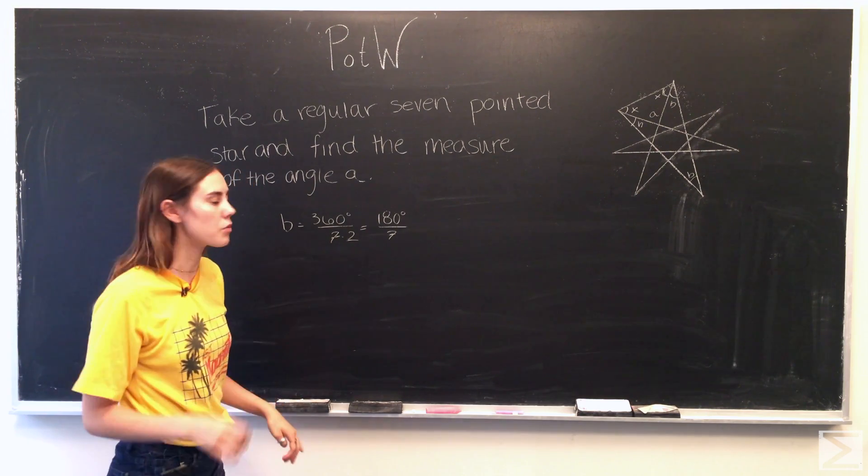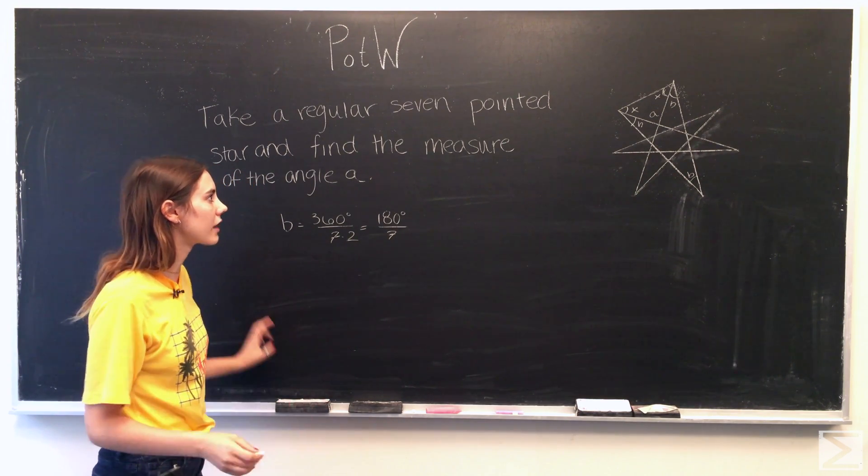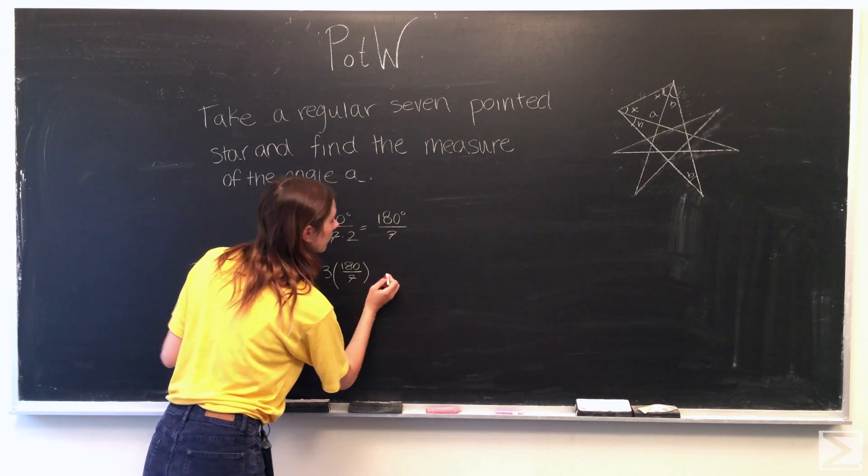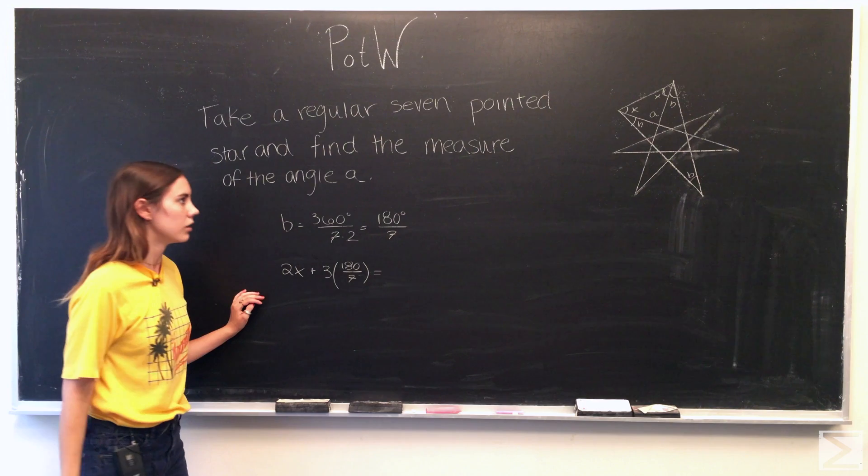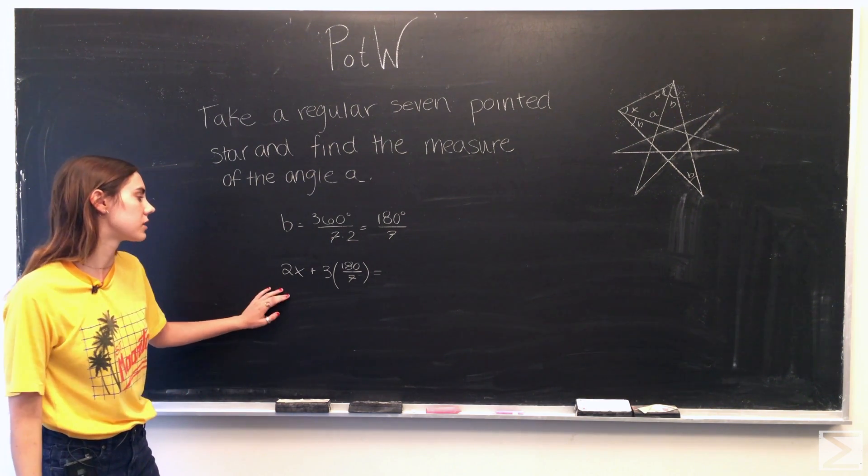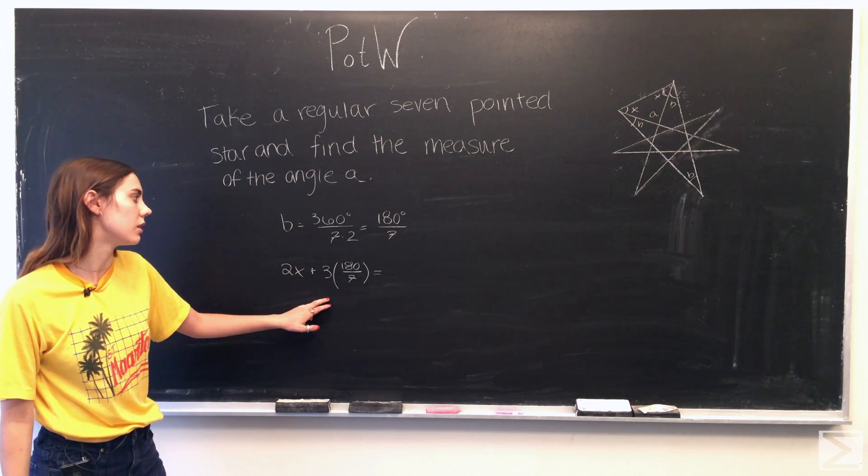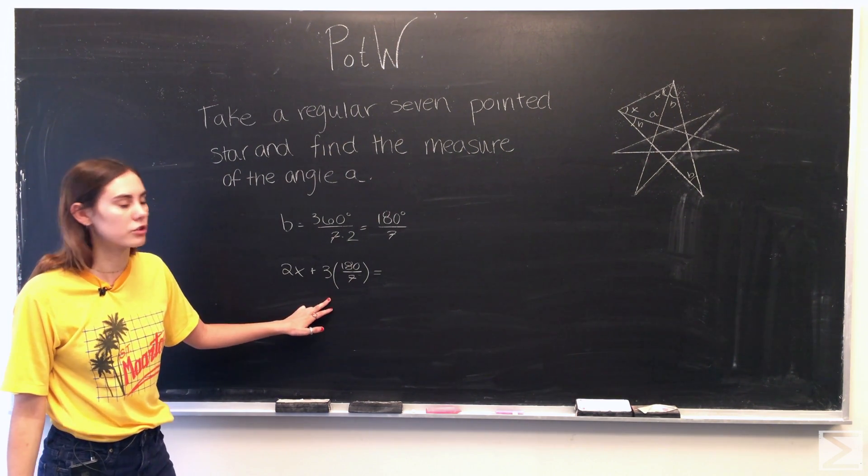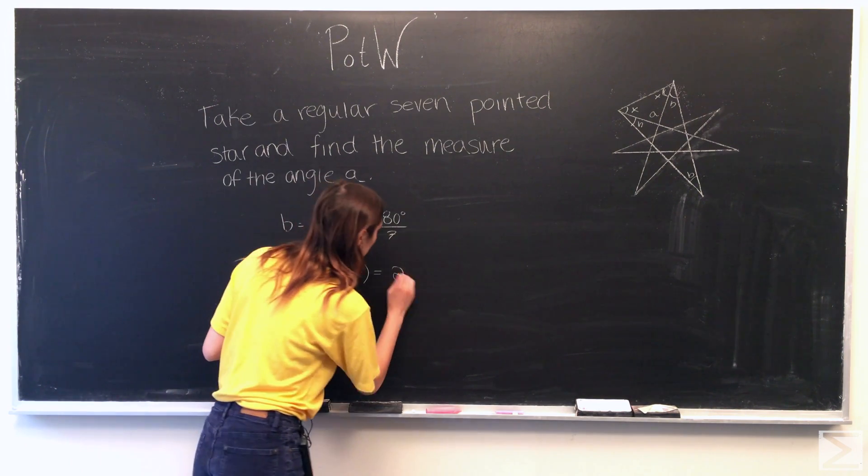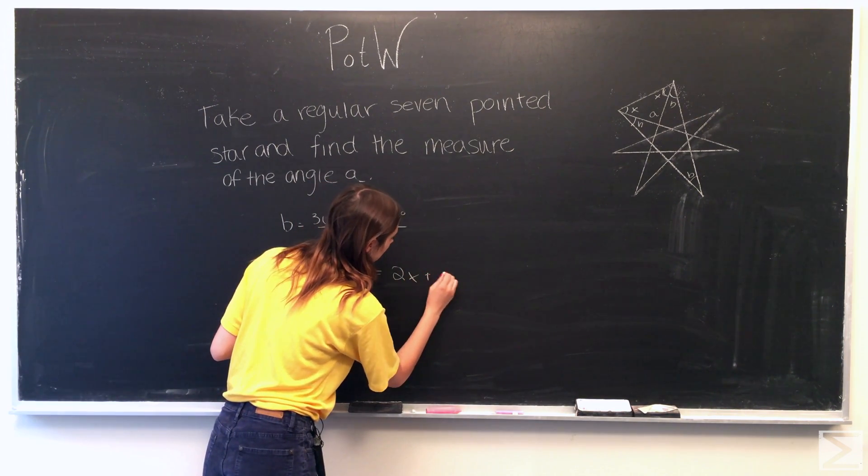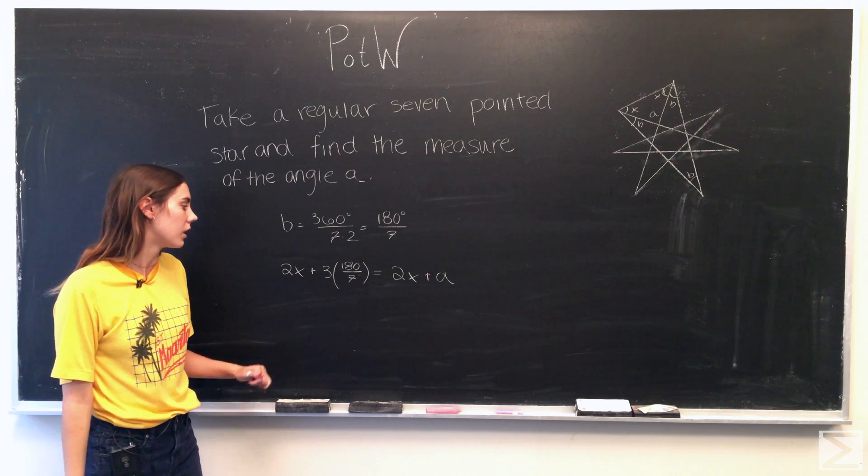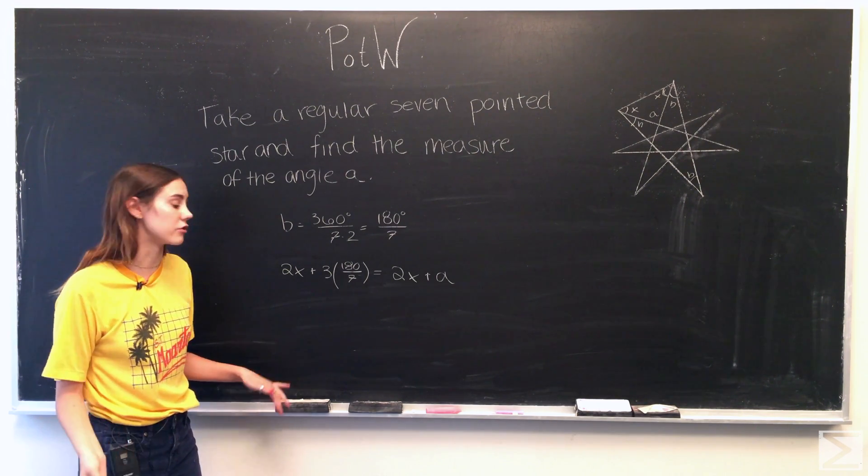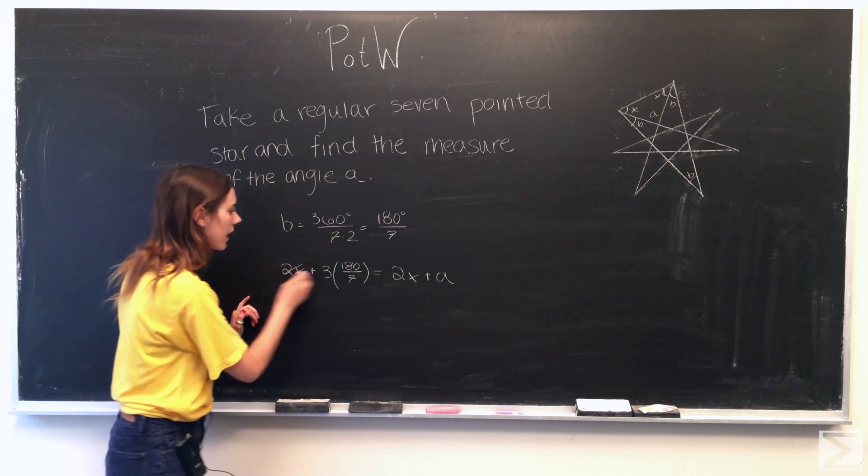So writing an equation for the large major triangle, we get 2X plus 3B, which is 3 times 180 over 7, is equal to the smaller triangle, which is 2X plus A. So we know that these are equal because all triangles add up to 180 degrees. So we can cross out the 2X.